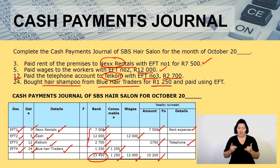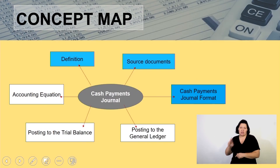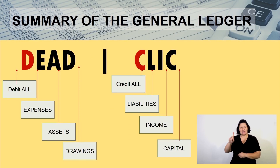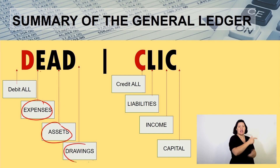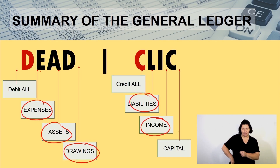It is very important that you understand how to post this to the general ledger. When posting, we need to know the DEAD CLIC rule: we debit all our Expenses (E), Assets (A), and Drawings (D). We credit our Liabilities (L), Income, and Capital. Let's apply this when posting.